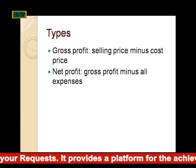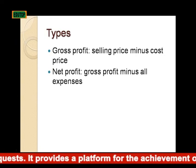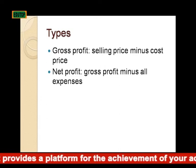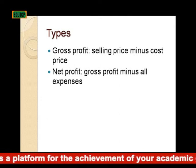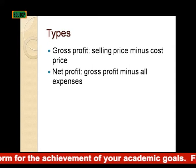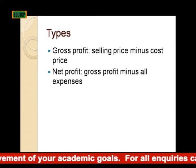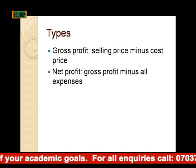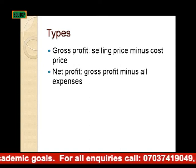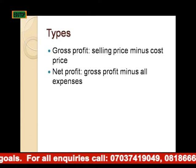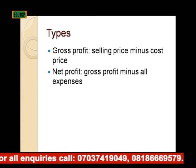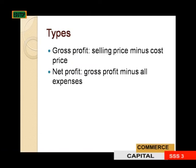It also makes funds available to all eligible borrowers. Profit: profit is the excess of total revenue over total expenditure. Types of profit: we have gross profit and net profit. Gross profit means selling price minus cost price. Net profit implies gross profit minus all expenses incurred in the production of goods and services.